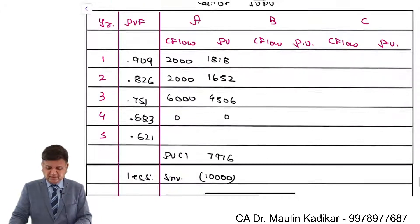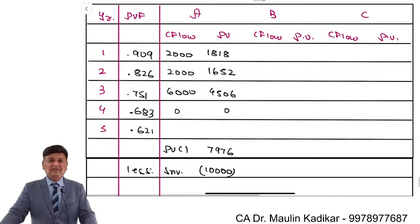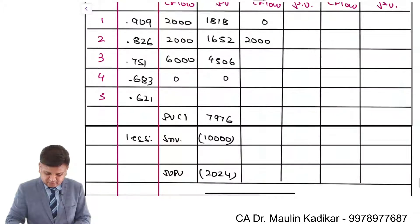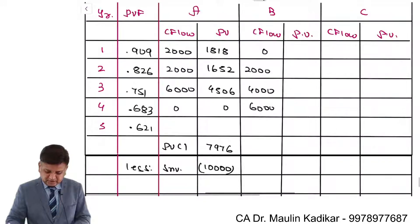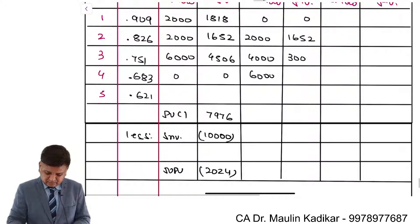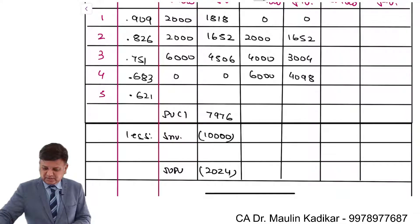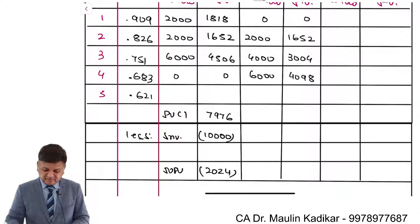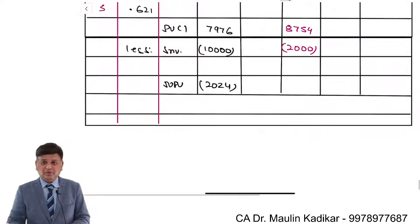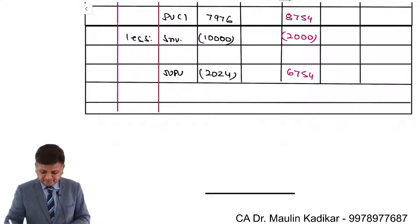For Project B, cash inflows are 0 in year 1, 2,000 in year 2, 4,000 in year 3, and 6,000 in year 4. Present values: 0 + 1,652 + (4,000 × 0.751 = 3,004) + (6,000 × 0.683 = 4,098). Total PV = 1,652 + 3,004 + 4,098 = 8,754. The investment is only 2,000, so the NPV is a large positive value of 6,754.